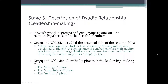Stage three is the description of dyadic relationship, which is essentially the process of leadership making. This moves beyond in-groups and out-groups to the one-on-one relationships between the leader and the members. Green and Olbein stated they studied the practical side of relationships, and thus the leadership-making model was developed to identify the importance of generating more high-quality relationships within organizations and to describe a process for how these may be realized in practice.